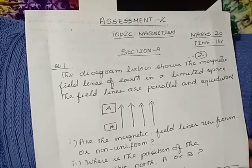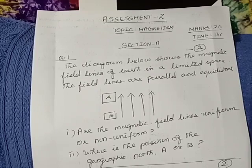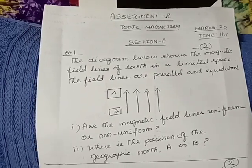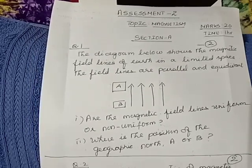Are the magnetic field lines uniform or non-uniform? Where is the position of geographic north, A or B? Allotment: 2 marks.